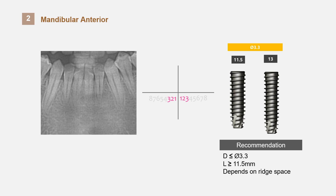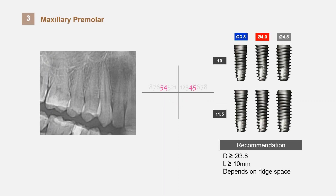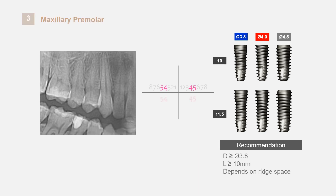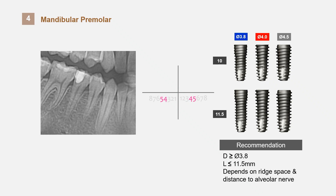In the case of mandibular anterior teeth, there are many cases of narrow bone width, so it is recommended to plan with an average narrow-size implant. Since the premolar tooth in the maxillary is a posterior tooth that affects occlusion, it needs to be planned with a diameter of more than the regular size of 3.8 millimeters and a length of more than 10 millimeters. However, the length can be shorter if the nasal cavity or maxillary sinus is in the vicinity, or the length can even be made longer by lifting the maxillary sinus. For the mandibular premolar, it can be planned with a diameter of more than 3.8 millimeters and a length of up to 11.5 millimeters depending on bone width and distance from the alveolar nerve.